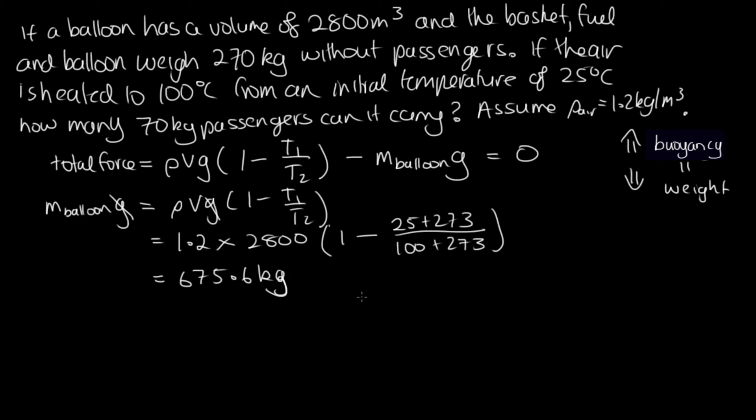Now that's the mass of the balloon plus the passengers. So we've got that this is equal to the mass of the people plus the mass of what it says here, which is the basket, fuel and the actual balloon. And so the mass of the people is equal to the 675.6 minus the mass of the balloon, fuel, and basket, which is 270.